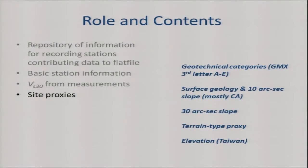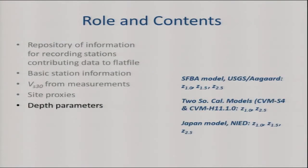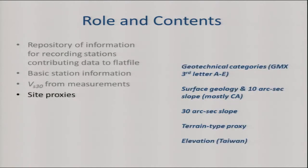A big emphasis for us was populating the database with the proxies themselves, not just the VS30 values that came out of them. If the correlation in the future were to change — for example, from slope to VS30 — you've got the slope, and you just apply the new correlation and can update your VS30 proxy accordingly.